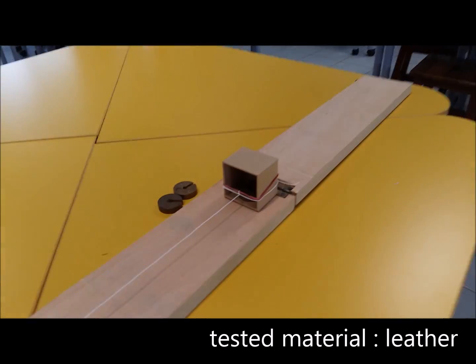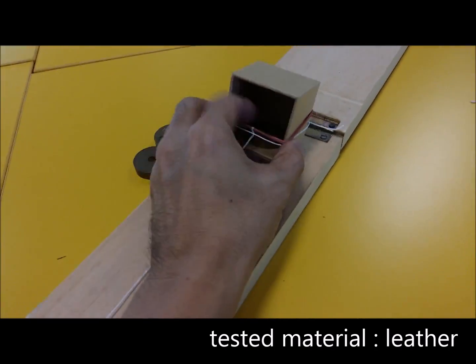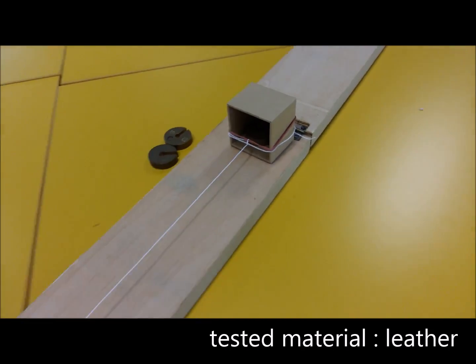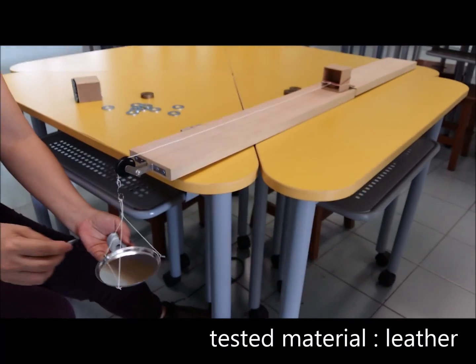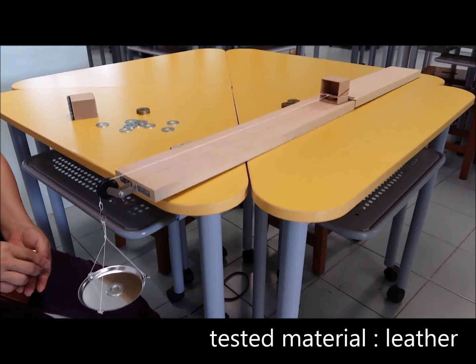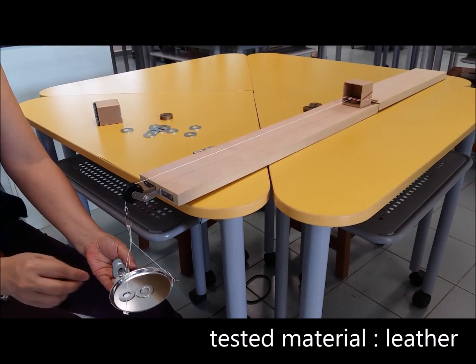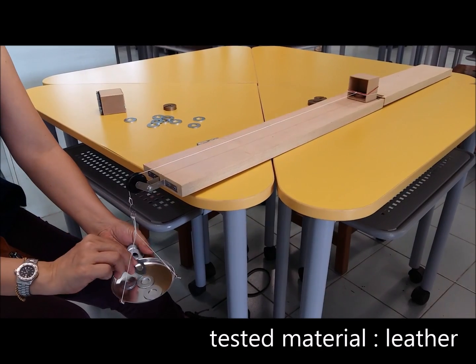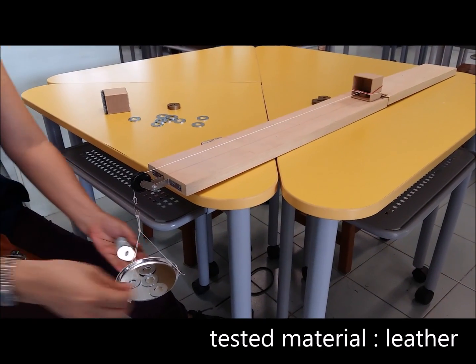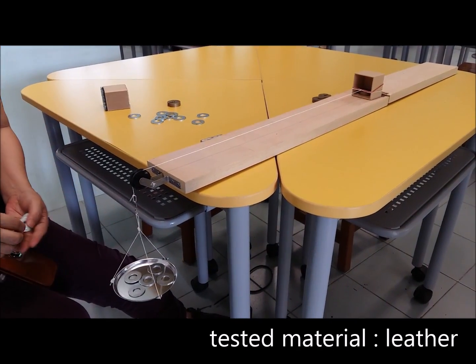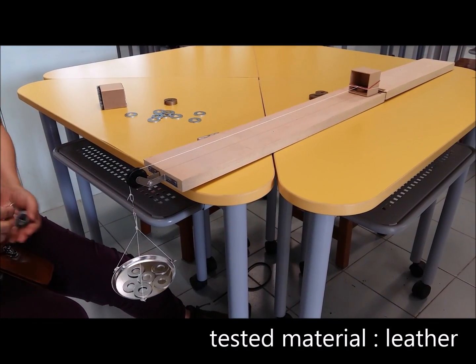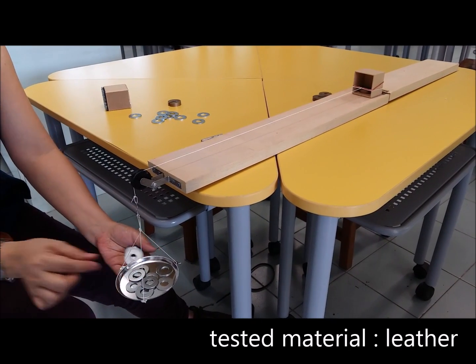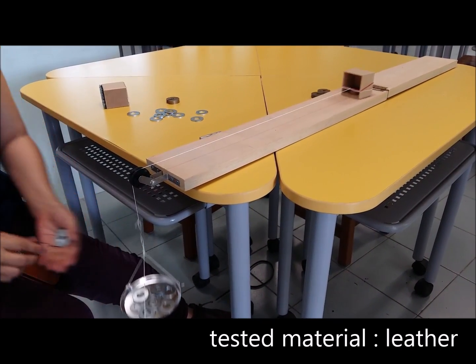The last material is leather. Again we have a 50 gram mass inside, and this is leather. Measure: one, two, three, four, five, six, seven, eight, nine.